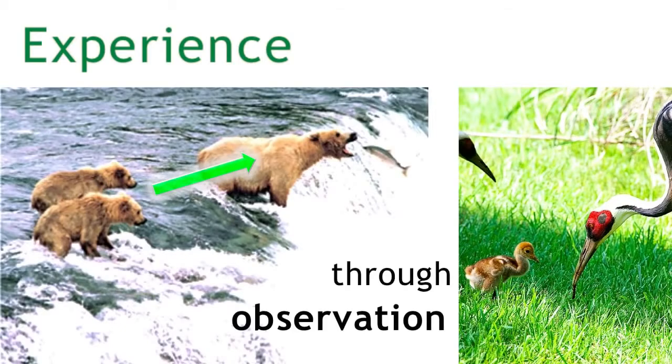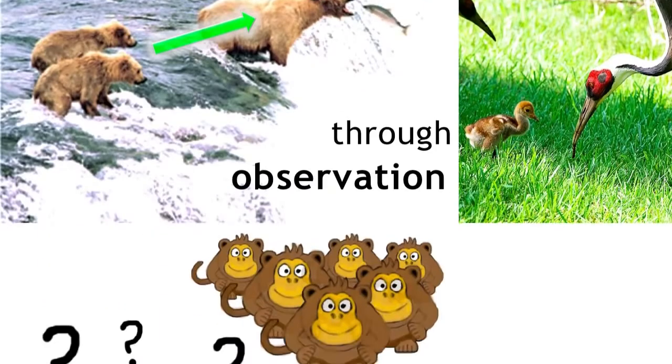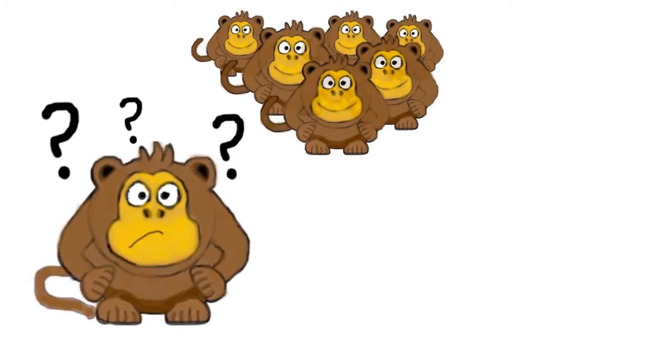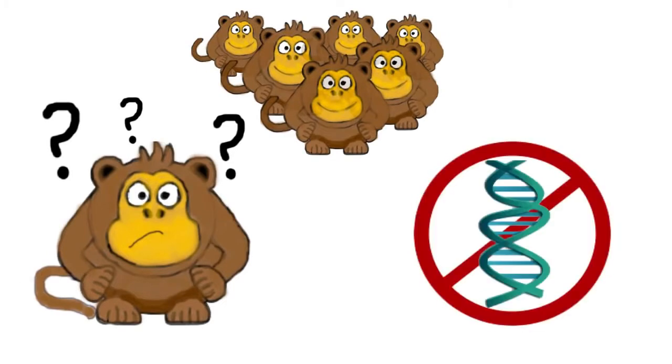Learned behaviour is based on experience. It is acquired only through observation, so it wouldn't be present in animals raised alone, without others of their species to observe, and it isn't coded in DNA.